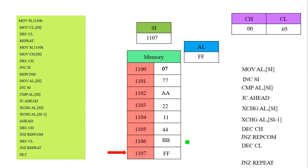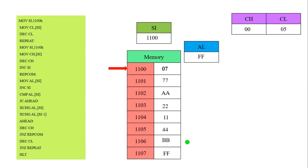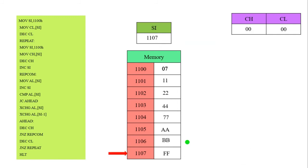Like that we are going to perform. This is the final step. In this final step, the CH register value becomes 0. The numbers are arranged in ascending order. This is our program. Now we are going to execute this program by using the 8086 emulator.